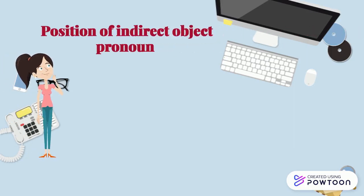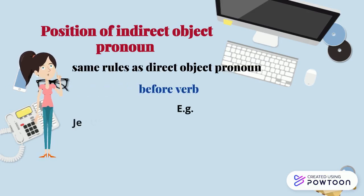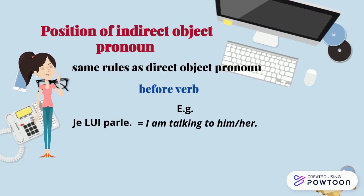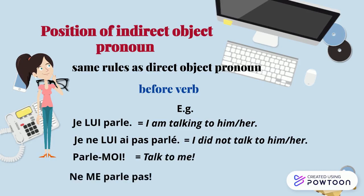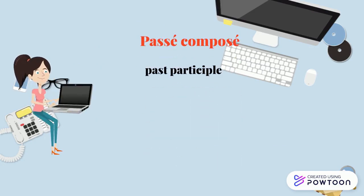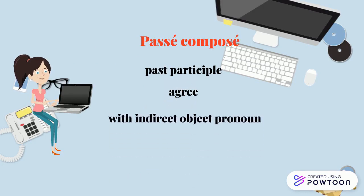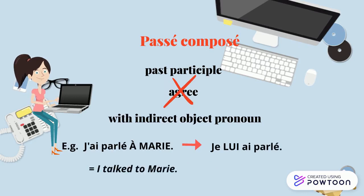Regarding its position in a sentence, all the rules of the position of direct object pronouns apply to indirect object pronouns, so it is mainly placed before the verb. For instance, 'je lui parle' — I am talking to him / I am talking to her. 'Je ne lui ai pas parlé' — I did not talk to him / I did not talk to her. 'Parle-moi' — imperative — talk to me. 'Ne me parle pas' — imperative negative — don't talk to me. However, at the passé composé, the past participle does not agree with the indirect object pronoun. For instance, 'J'ai parlé à Marie' becomes 'Je lui ai parlé' — I talked to Marie / I talked to her.